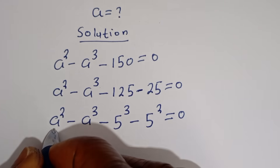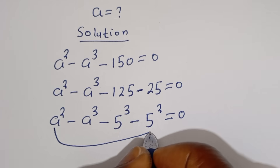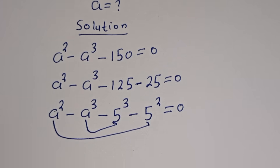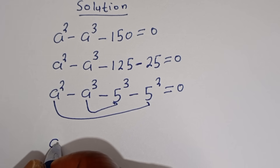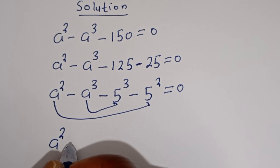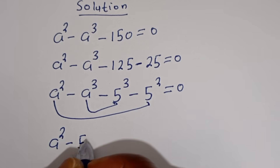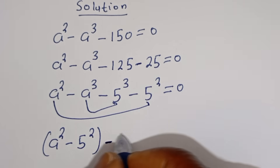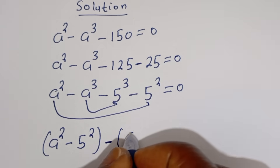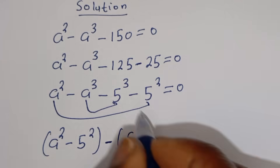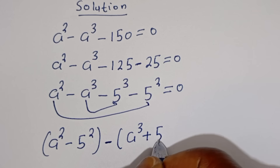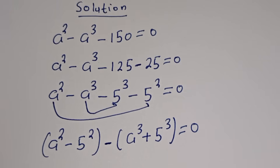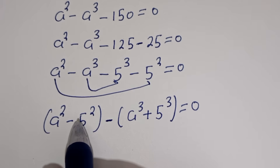Now we can pair A squared with minus 5 squared, and pair A to the power of 3 with minus 5 to the power of 3. We have A squared minus 5 squared, then minus A to the power of 3 plus 5 to the power of 3, is equal to 0.